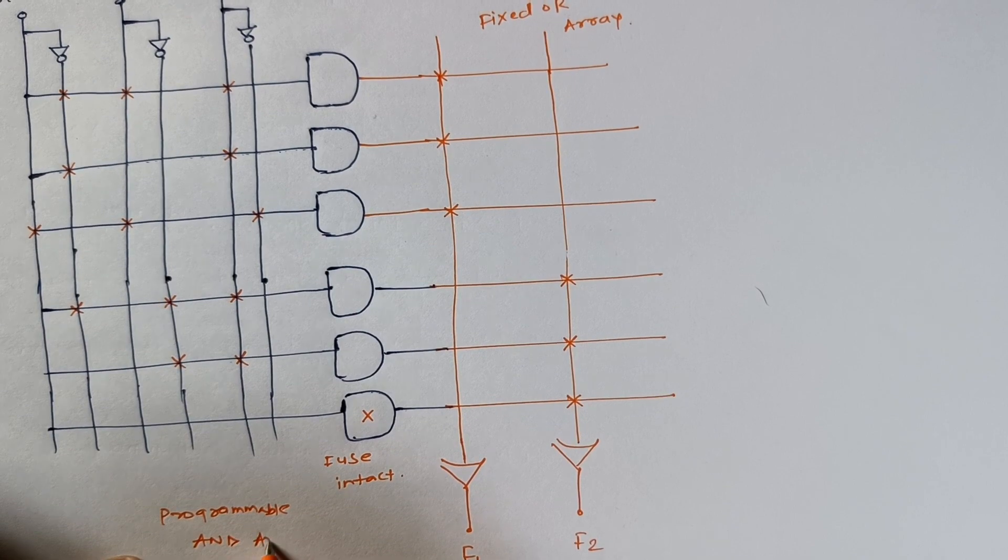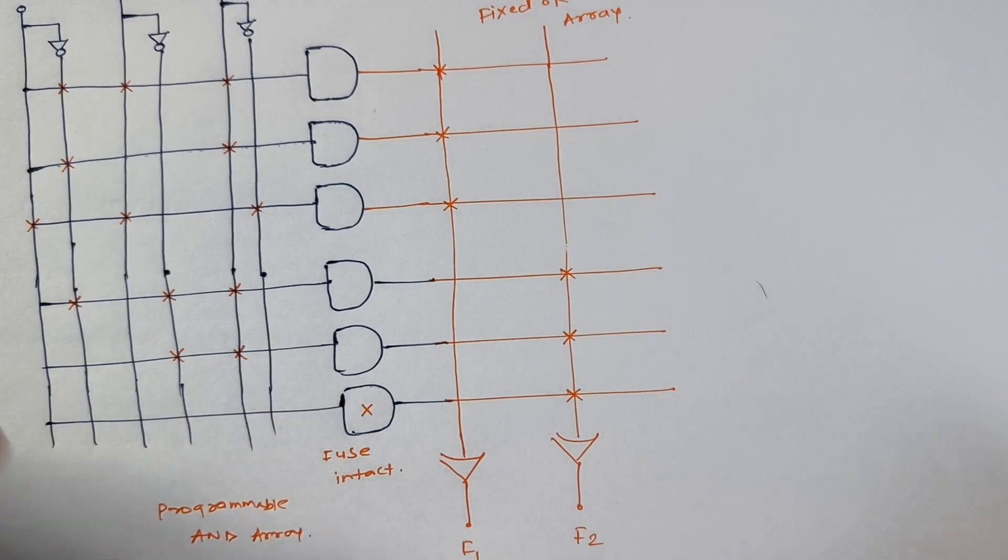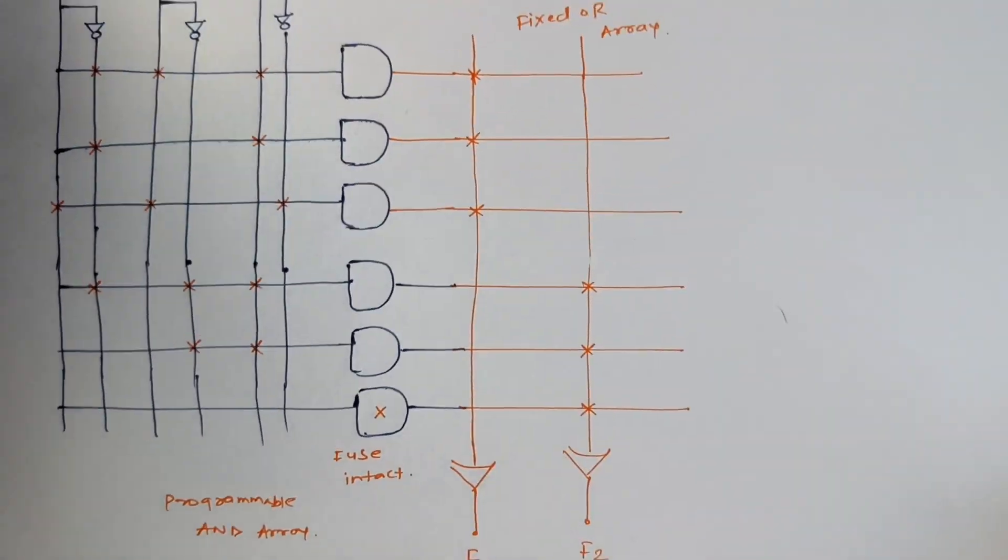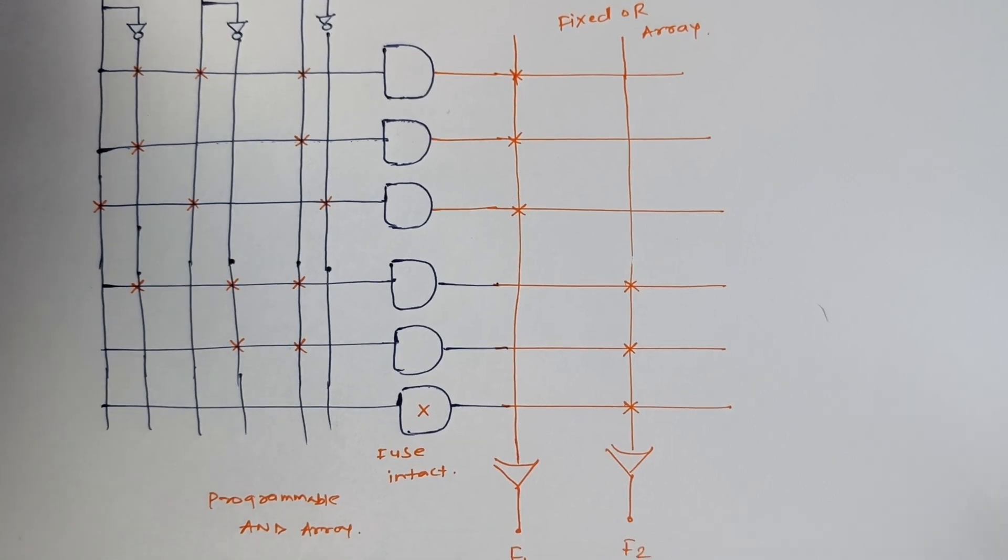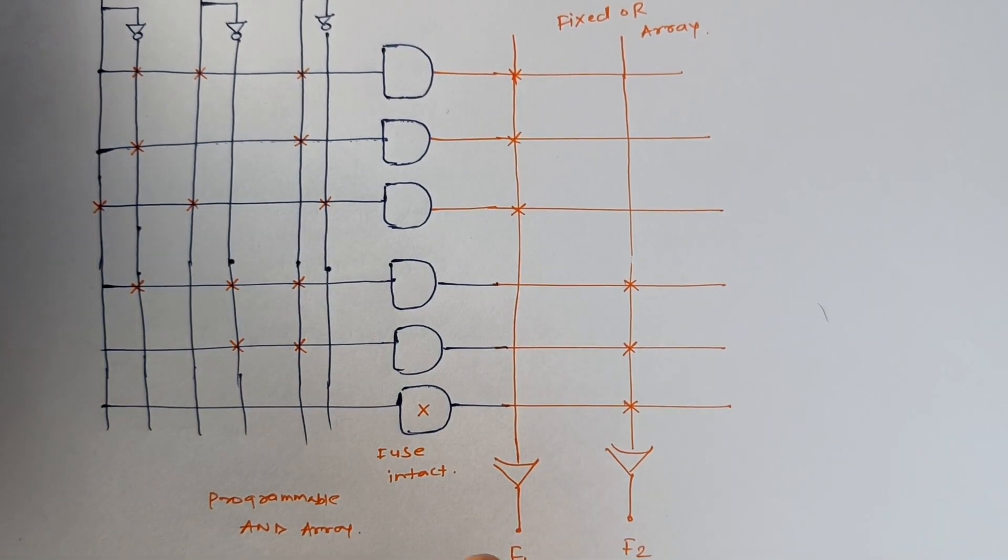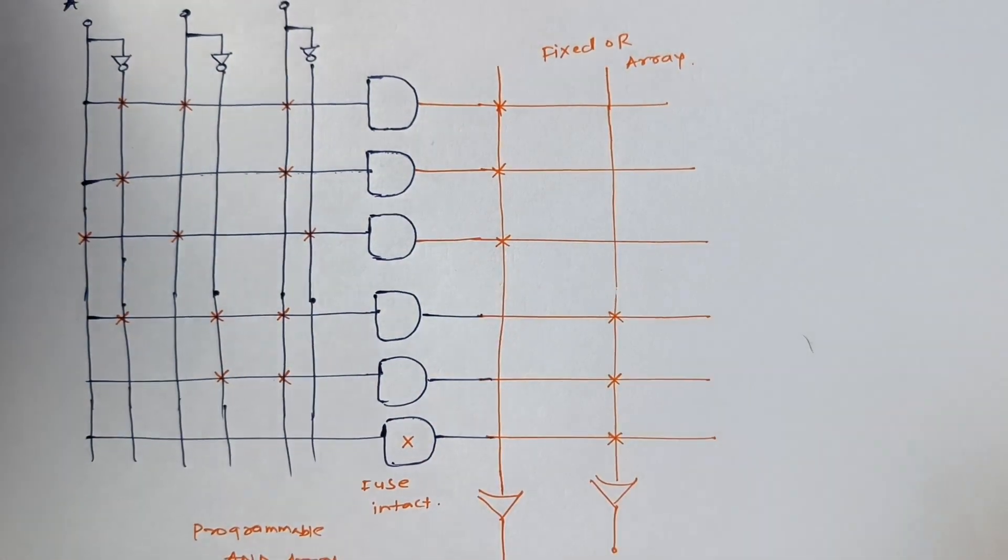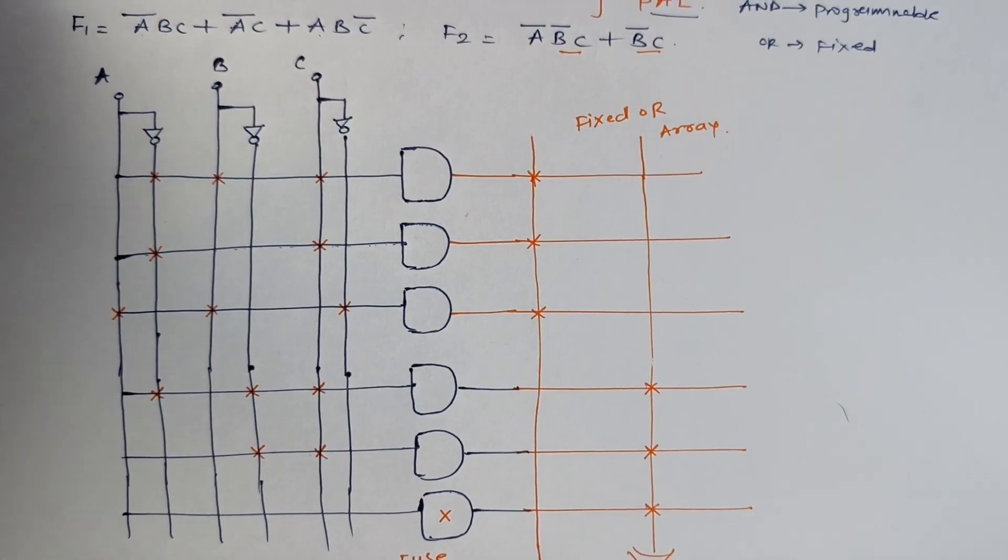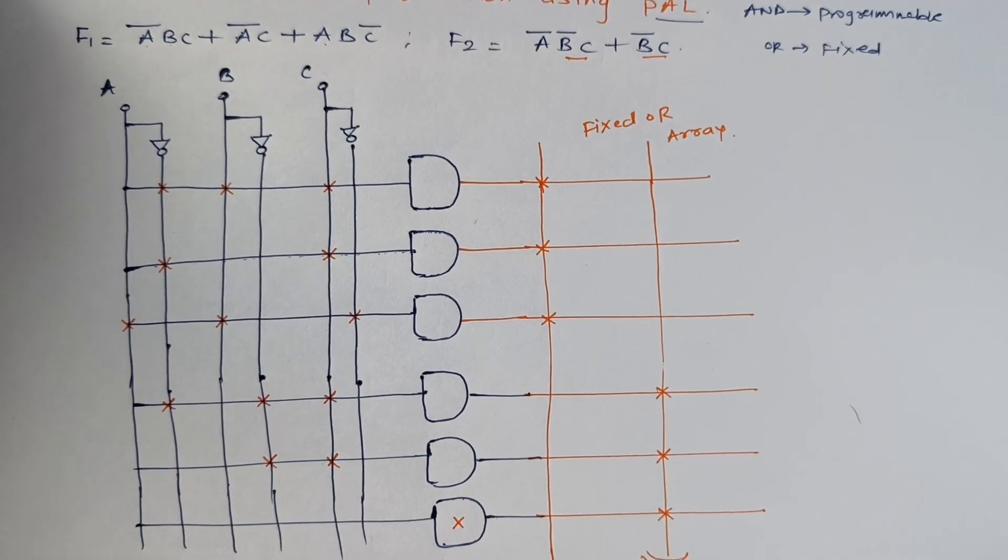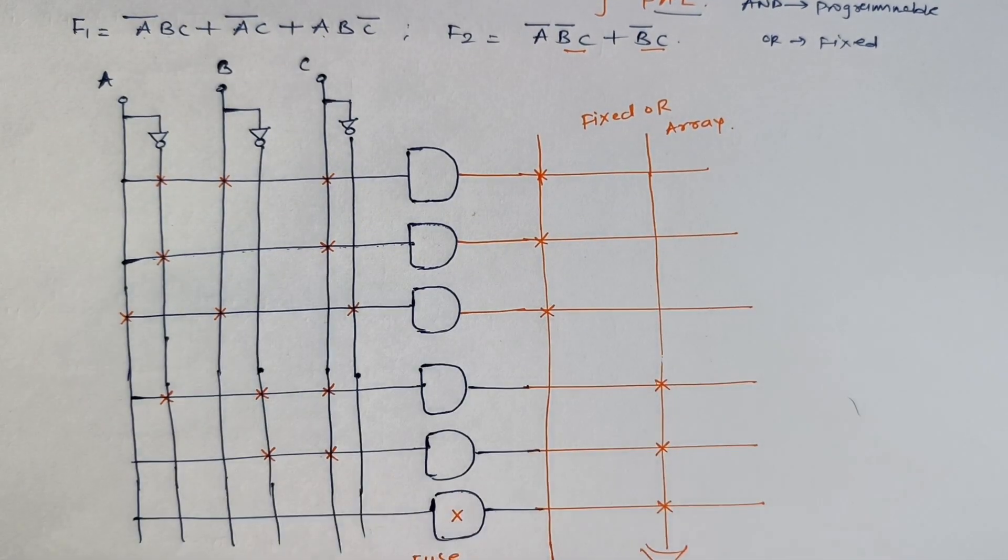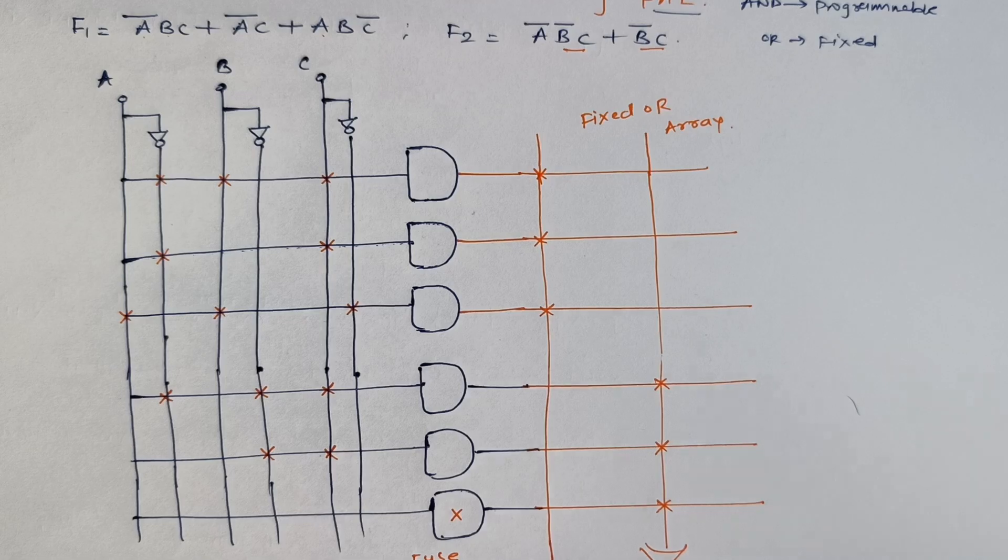This structure is for fixed OR array and this is for programmable AND array. So this is how we have implemented the given function using programmable array logic. The AND gate is programmable and the OR gate is fixed. I hope you understood this point. Similarly, we will see other examples on PAL. Thank you.